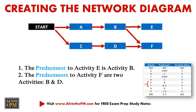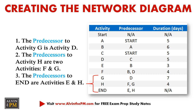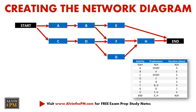For the last and final rows in the table, the predecessor to activity G is activity D. The predecessors to activity H are two activities: F and G. And lastly, the predecessors to End are activities E and H. After you make these updates, we now have the final completed diagram as shown on the screen.